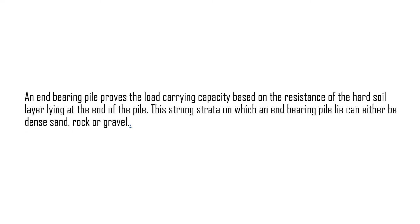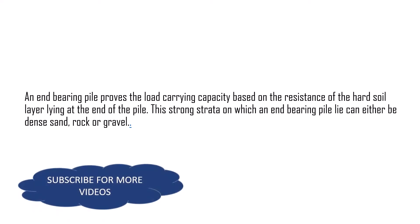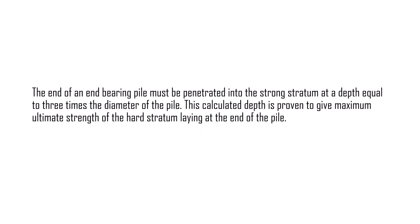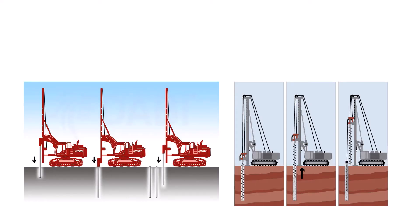Construction features of end bearing piles: An end bearing pile provides load carrying capacity based on the resistance of the hard soil over which the end of the pile is resting. This strong strata on which an end bearing pile lies can either be dense sand, rock, or gravel. The end of an end bearing pile must penetrate into the strong stratum at a depth equal to three times the diameter of the pile. This calculated depth is proven to give maximum ultimate strength of the hard stratum laying under the end of the pile.